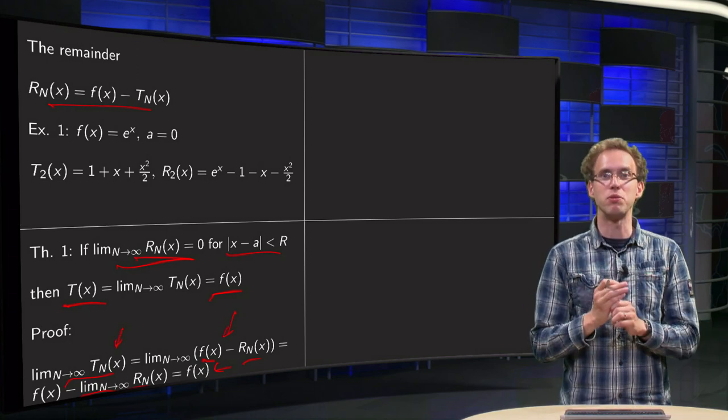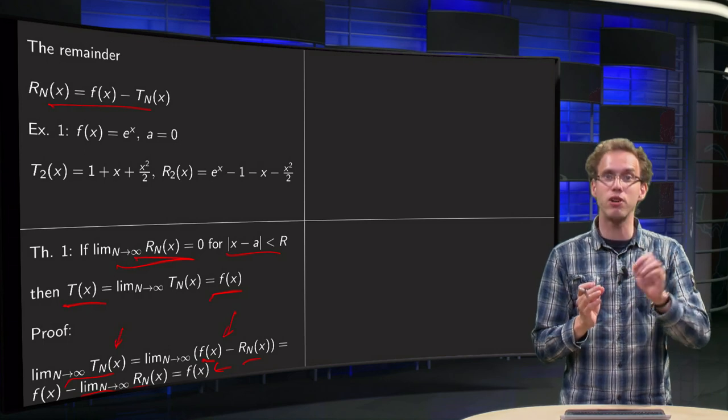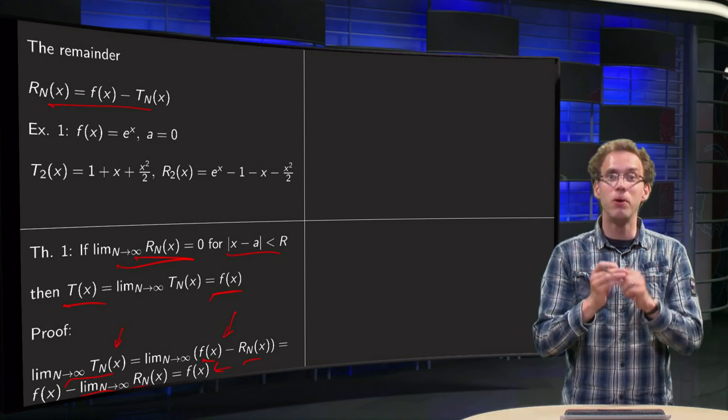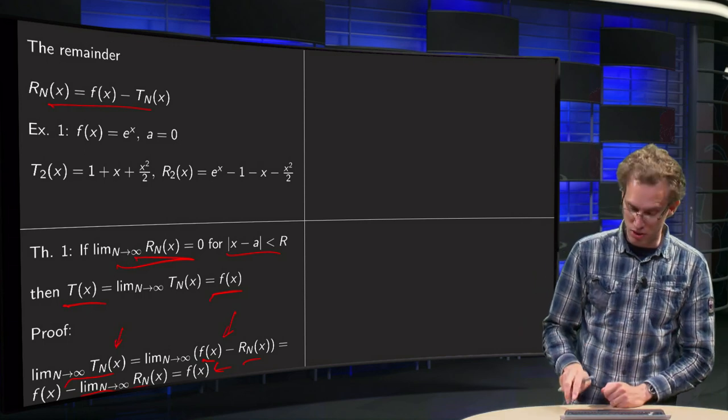So that's nice. If we have an expression for our remainder, and if we can show that it goes to 0, then we know that our function will be equal to our Taylor series.